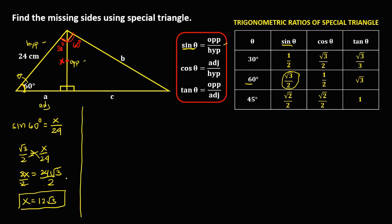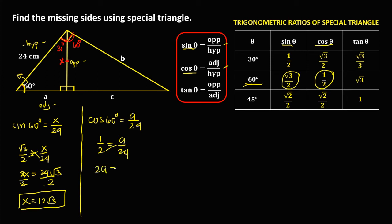To solve for side A, since A is the adjacent and the given is the hypotenuse, adjacent over hypotenuse is cosine theta, and theta is 60 degrees. Cosine 60 degrees equals A over 24. Cosine 60 is 1/2, so 1/2 equals A over 24. Cross-multiplying gives 2A equals 24. Dividing by 2, A equals 12 centimeters. So this is now for side A.